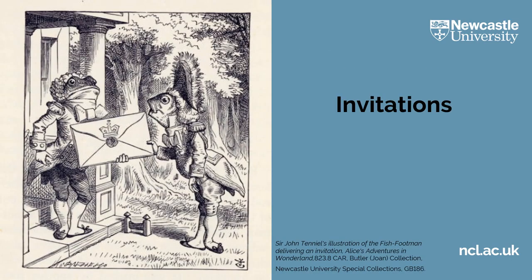Invitations are the first thing you'll need if you're going to host your own Mad Hatter's Tea Party. This black and white illustration comes from a later edition of Alice's Adventures in Wonderland in our special collections. This edition was published in 1955 and was illustrated by Sir John Tenniel. It shows a fish footman delivering a croquet invitation from the Queen of Hearts to the Duchess's frog footman, which he then delivers to the Duchess. Croquet is a game you play on a lawn. It involves using mallets to knock wooden balls through a series of square shaped hoops. Have you ever played croquet?